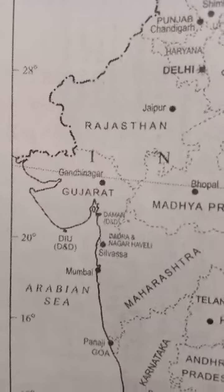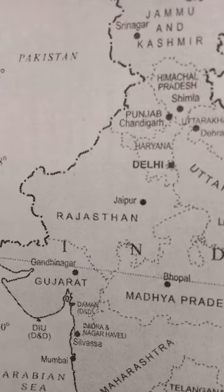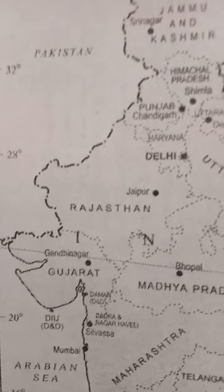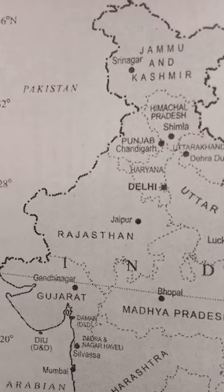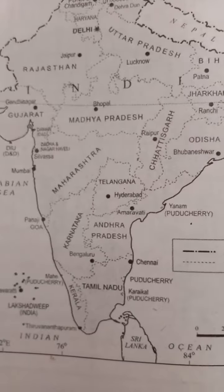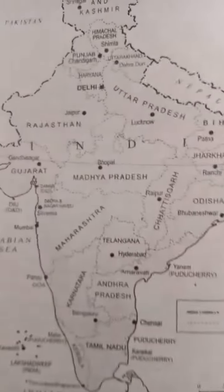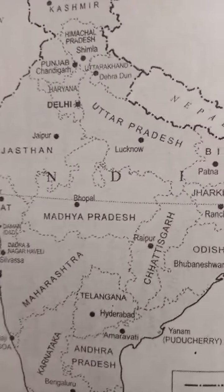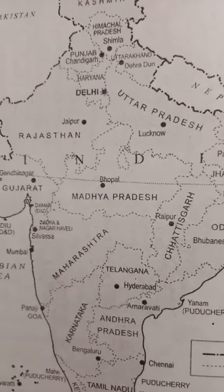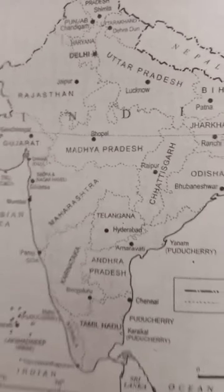Gujarat has Gandhinagar, and the northeastern boundary from Rajasthan to Jammu and Kashmir is visible here. This map will provide you information about India's 2017 status and location. Federalism is very important for understanding the political map of India, and we will meet in the next discussions with a lot more.